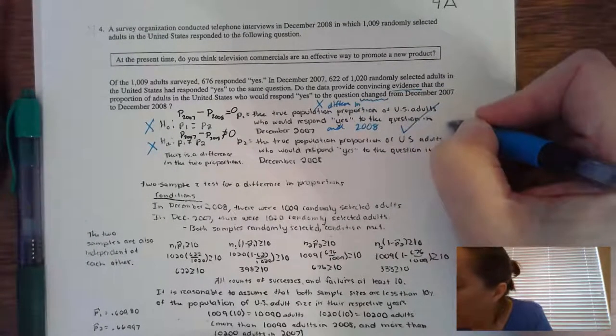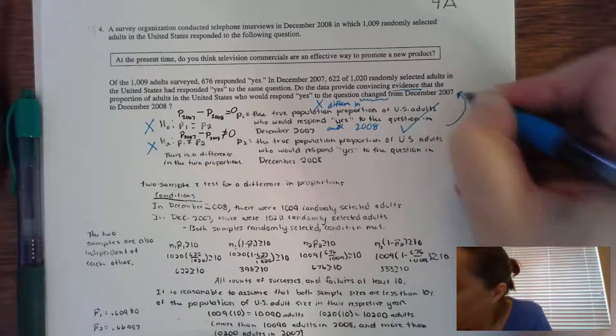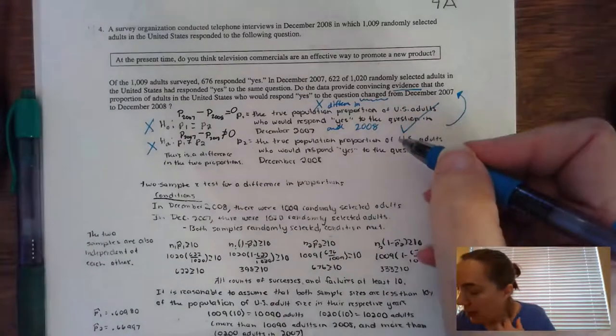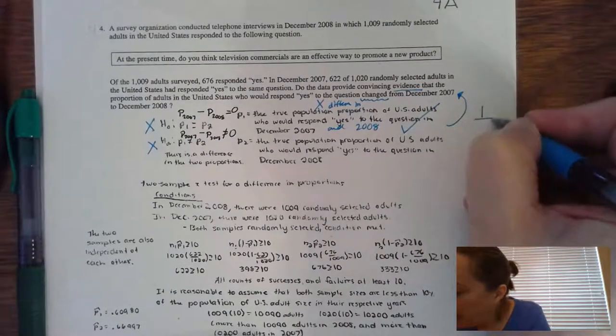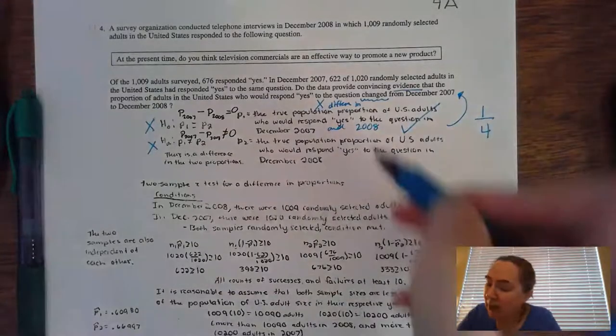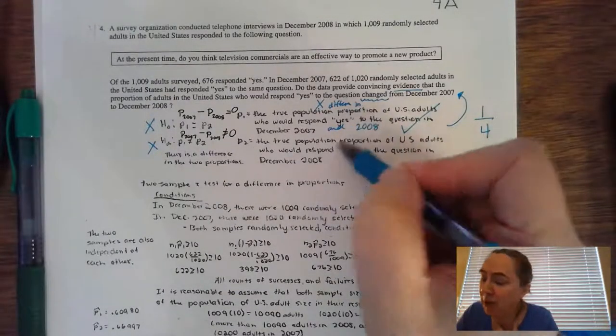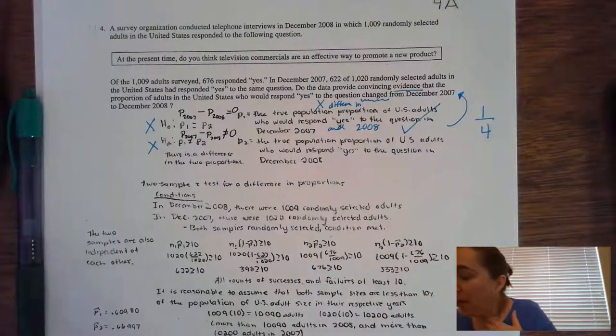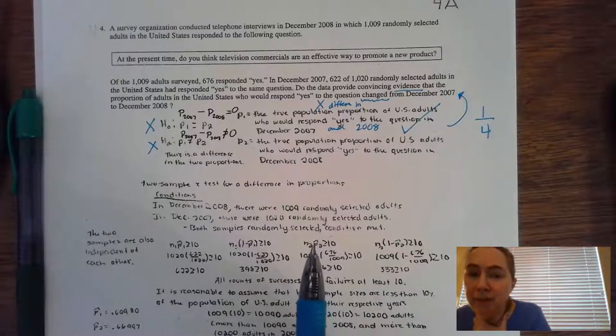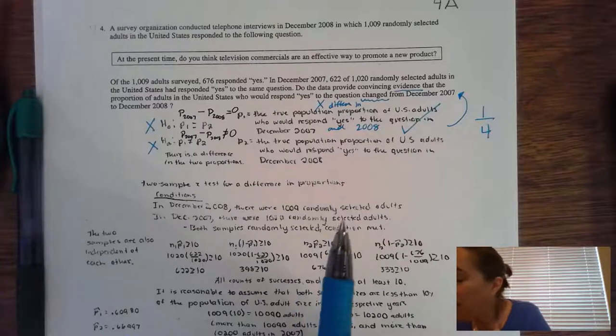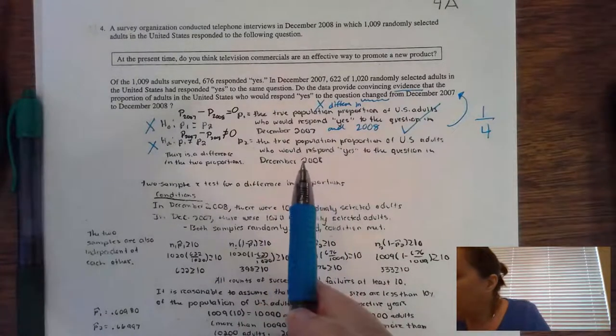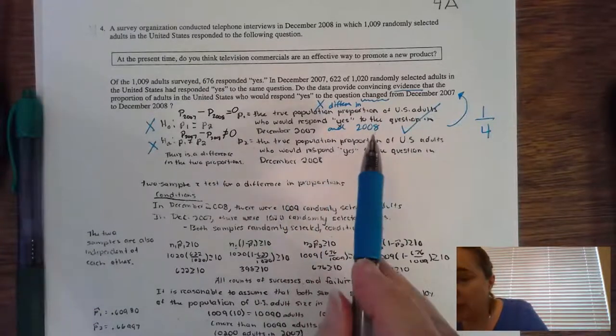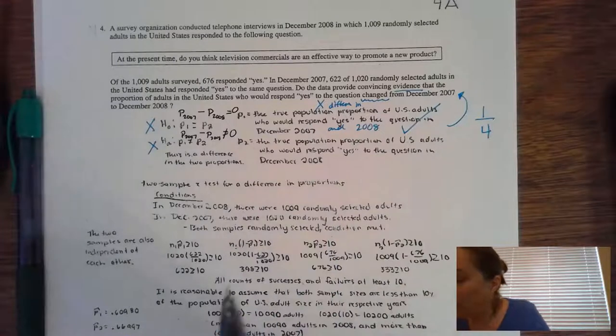I'm going to give them credit for that. Remember, restate the words of the problem. Use their words to be able to give yourself credit on that. So I'm going to give them a check mark. That means they're going to get really only one check out of the four for this particular part. And I'm only looking at the first one because if you did it right here, you're most likely did it right in the HA. So the null hypothesis states that the true population difference in the proportion of U.S. adults who respond yes to the question in December of 2007 and 2008 is equal to zero. And the HA is that it is not equal to zero.